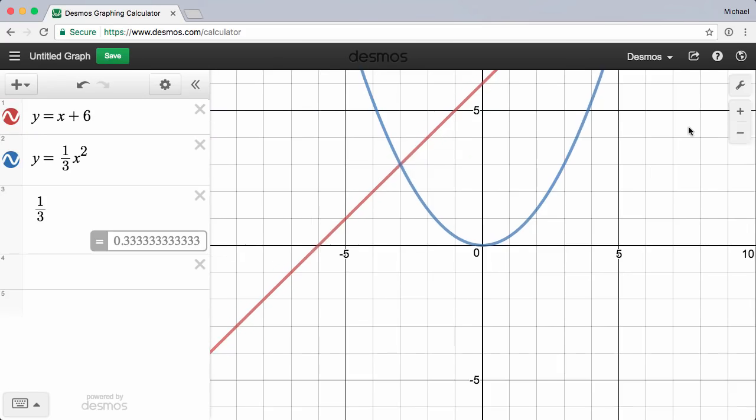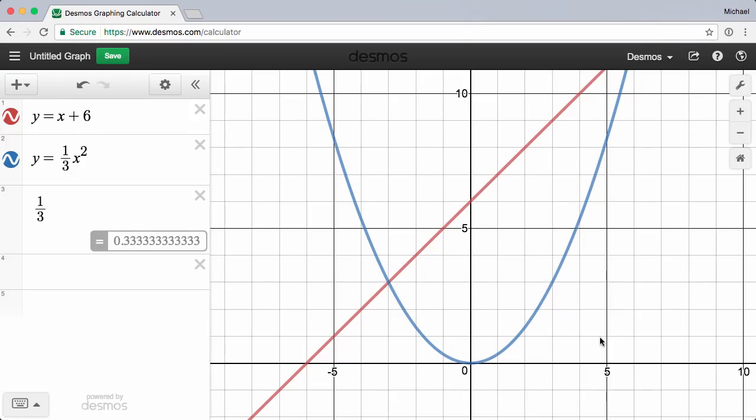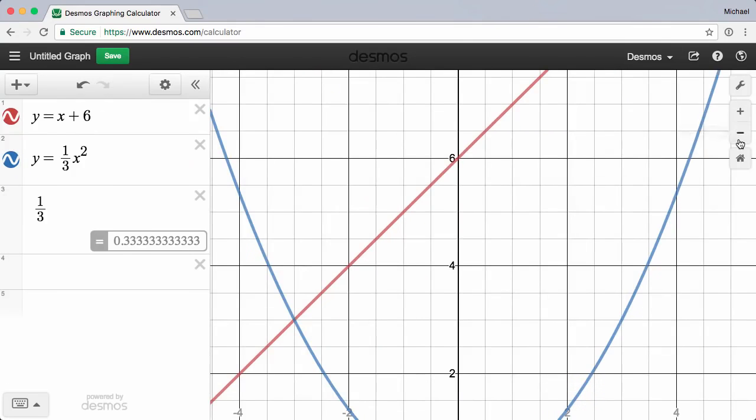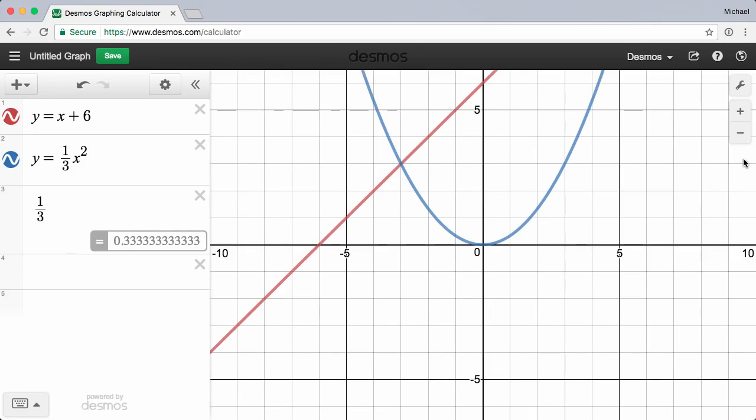Adjusting the viewing window is easy too. Click, hold, and drag to move the graph paper around, or use zoom in, zoom out to get a close up or big picture view. Want to go back to the default? Just press the home icon to reset the window.